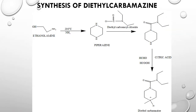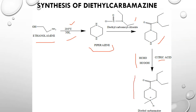For the synthesis of diethylcarbamazine: the starting material is ethanolamine. It is heated at 200 degrees centigrade in the presence of a piperazine moiety. Diethylcarbamoyl chloride is then reacted. The intermediate is formed, followed by reaction with formaldehyde, formic acid, and citric acid in the presence of diethylcarbamoyl chloride to yield the final compound. Ethanolamine reacts with ammonia to give piperazine, then diethylcarbamoyl chloride gives the intermediate, then formaldehyde and formic acid give the final compound.